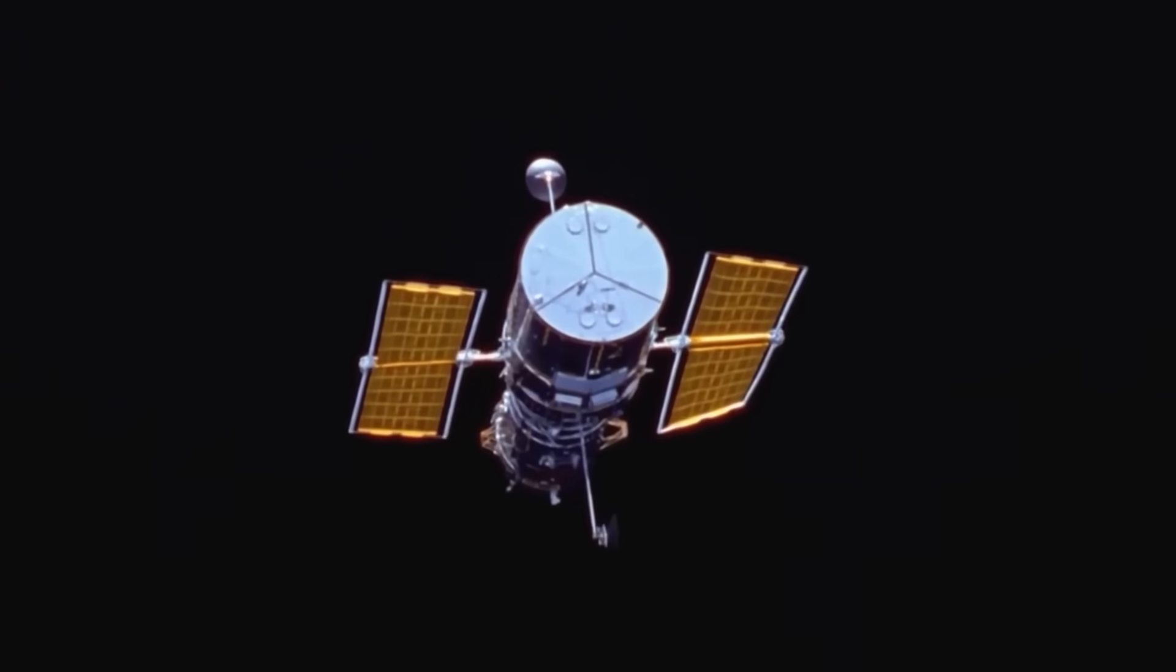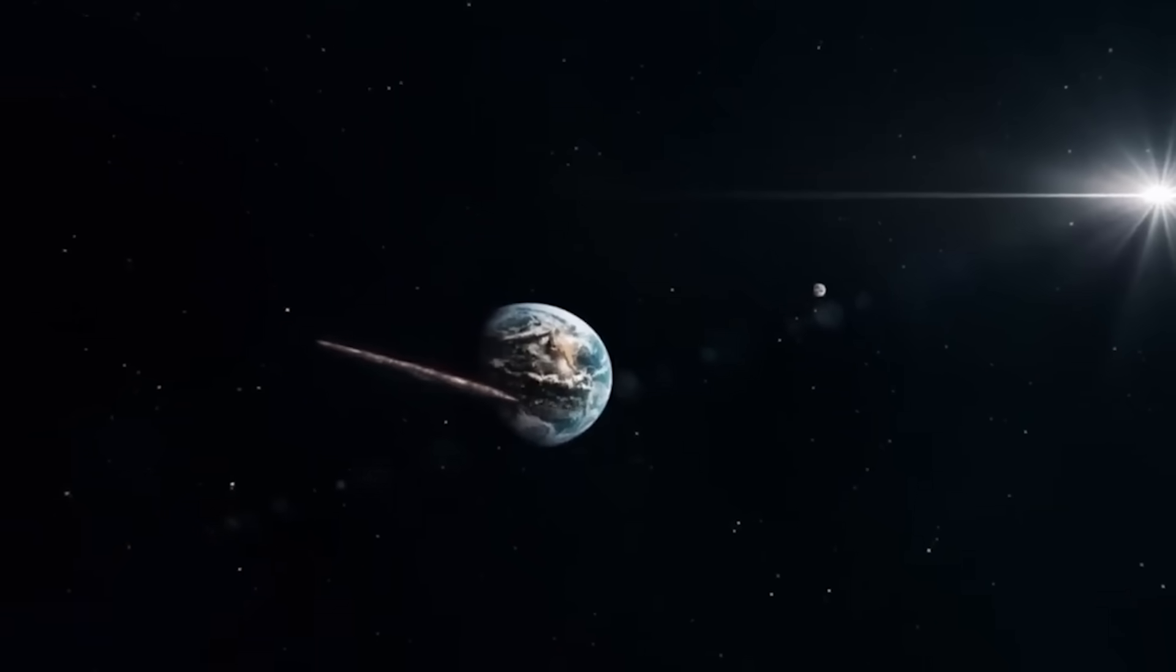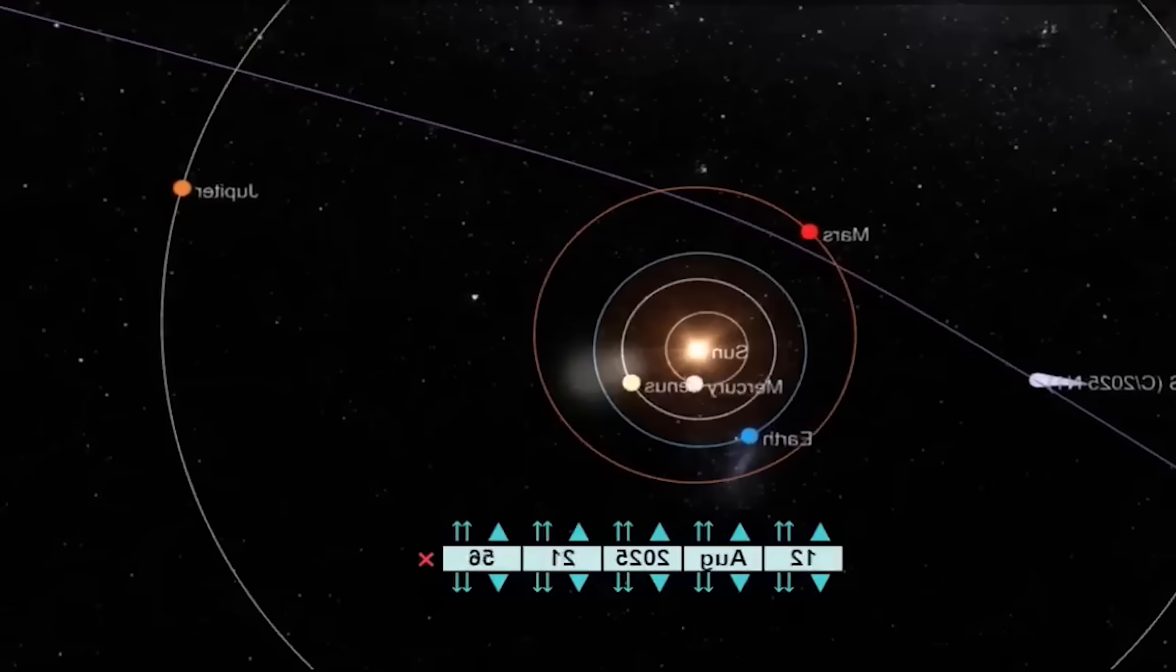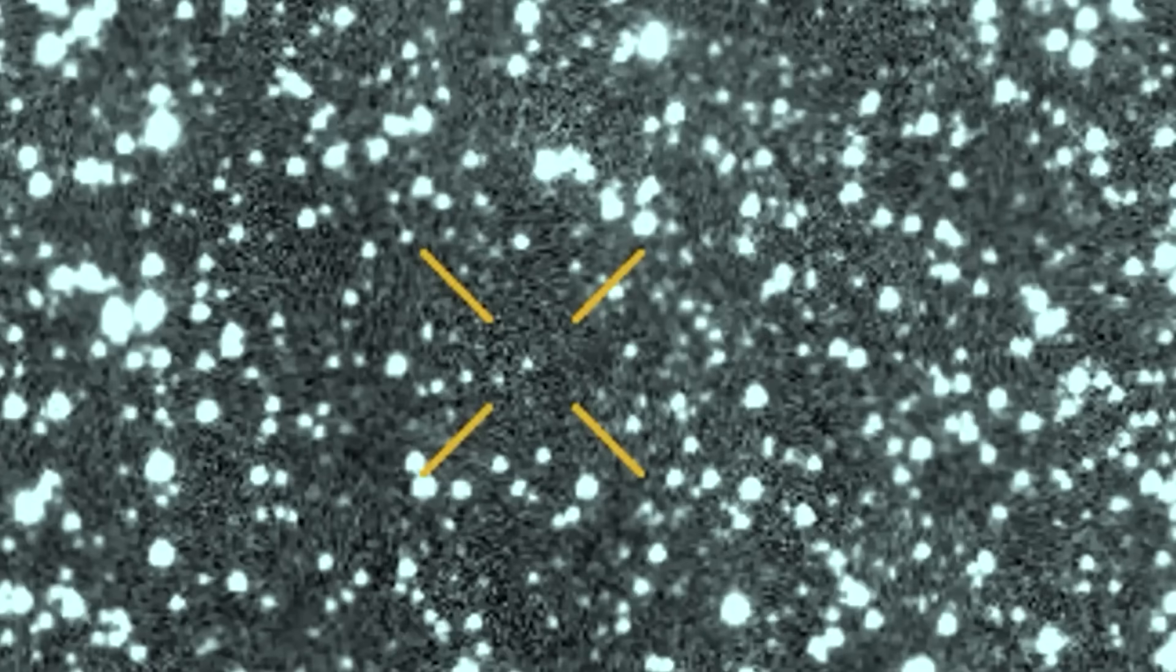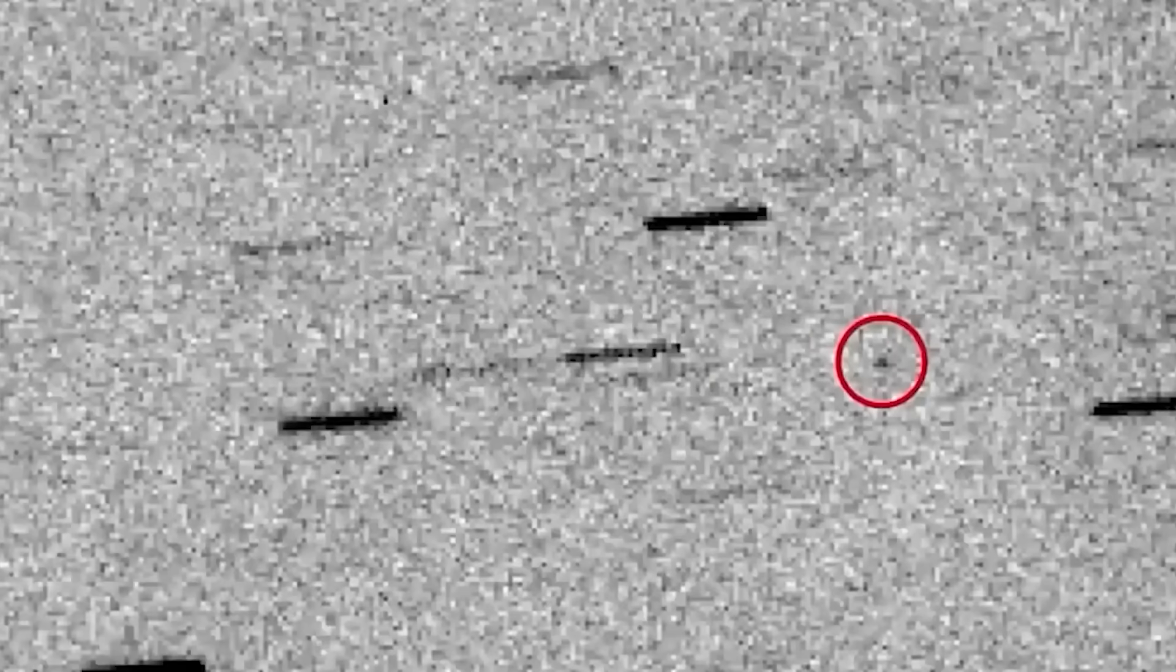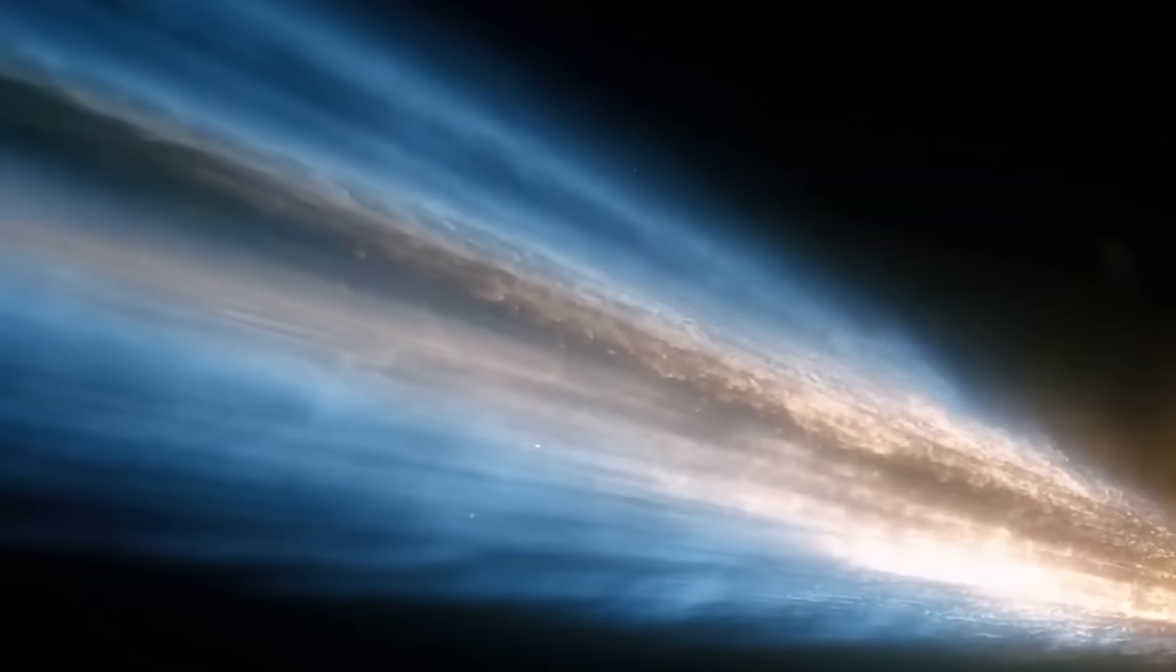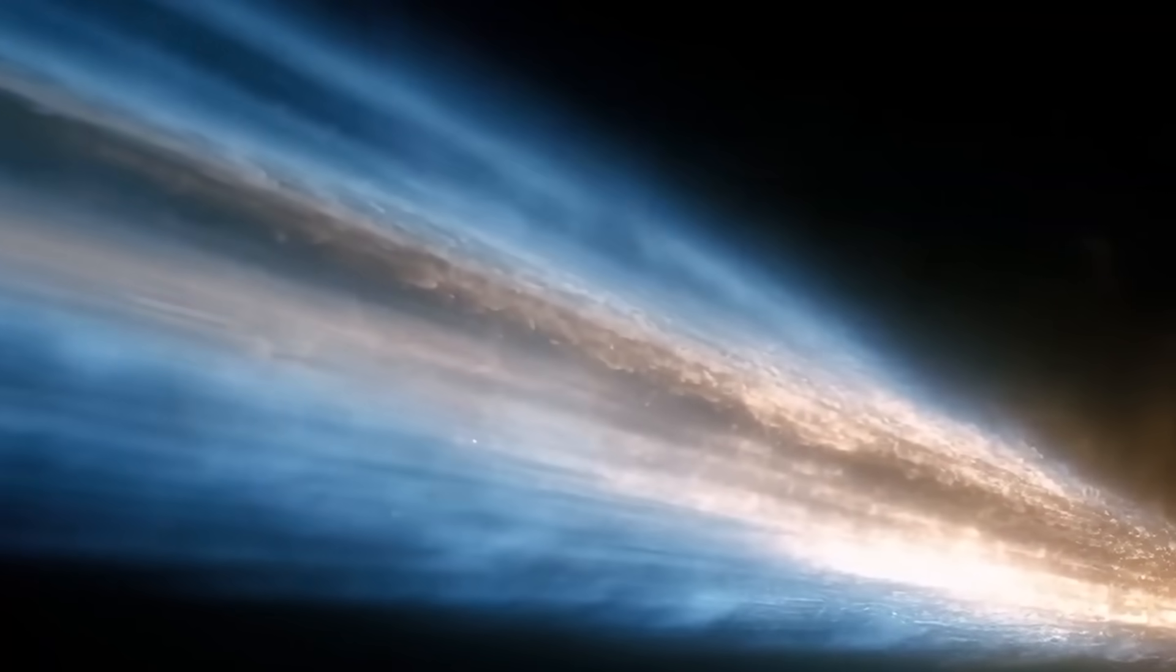But Hubble's observations revealed something else crucial. Through careful measurement of the coma's luminosity, scientists could determine the dimensions of the rocky core concealed beneath the glowing envelope. The calculations showed the core measures no more than 5.6 kilometers in diameter, and could be as small as 320 meters across. This relatively tiny nucleus was producing a spectacular light show visible from billions of kilometers away.